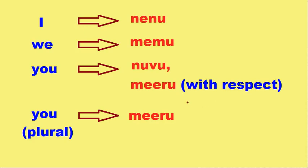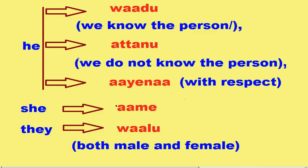Miru is used when you are speaking with elderly people, that is when you are speaking with respect. 'You' in plural form, like 'you all', is also called Miru. 'He' is called Wadu, Atanu, or Ayana. Wadu is used when we know the person.